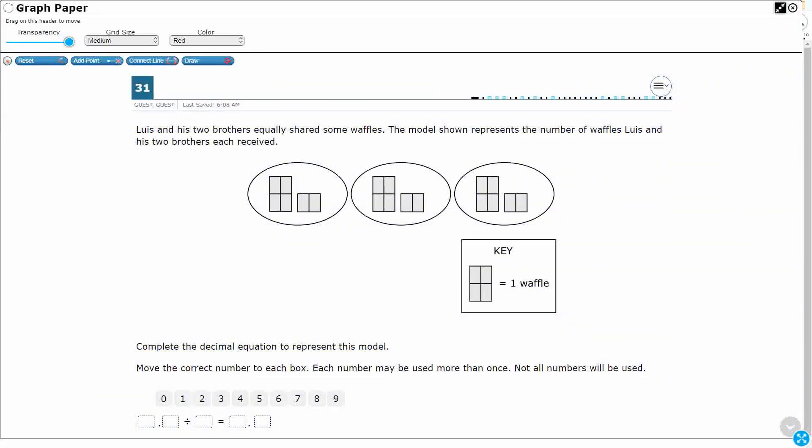So this is how it works here. If you want full credit, that's two points, you need to get all five blanks correct. Partial credit is one point, and that is going to be if you get four correct or three correct.